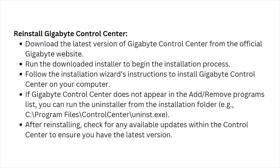To reinstall, download the latest version of the Gigabyte Control Center from the official Gigabyte website. Run the downloaded installer and follow the installation wizard instructions to install it on your computer. If the Gigabyte Control Center does not appear in the Programs and Features list, you can run the uninstaller from the installation folder. After reinstalling, check for any available updates within the Control Center to ensure you have the latest version.